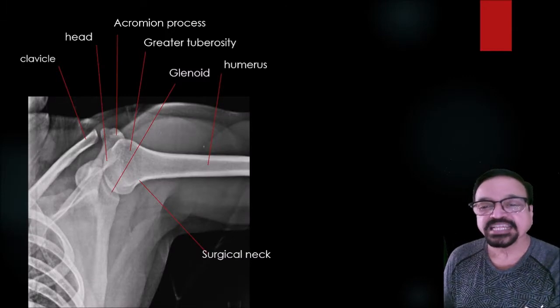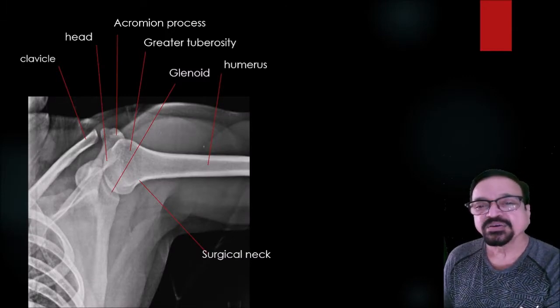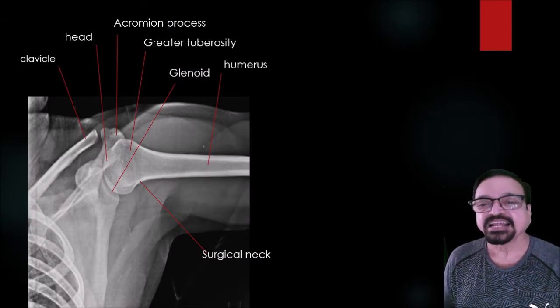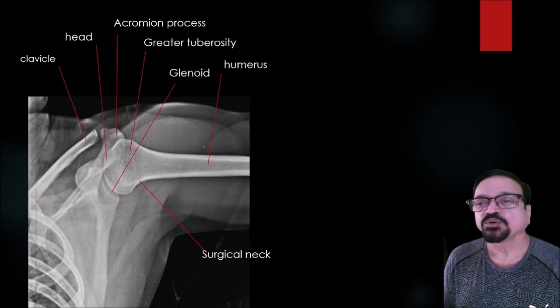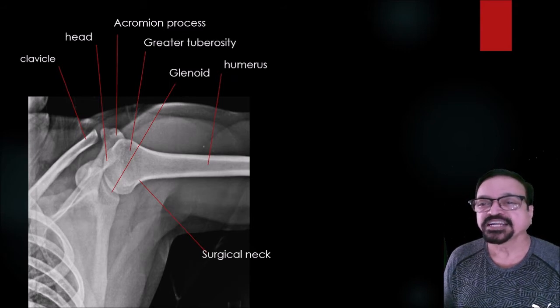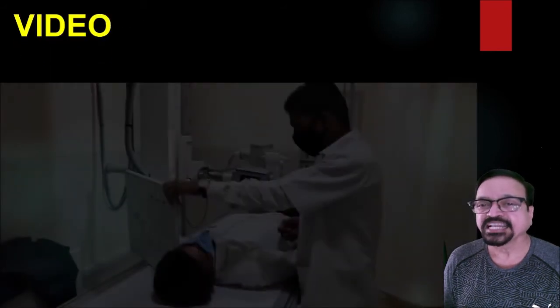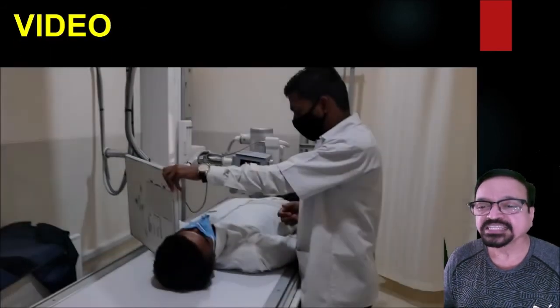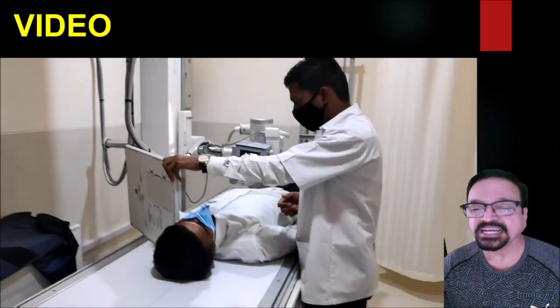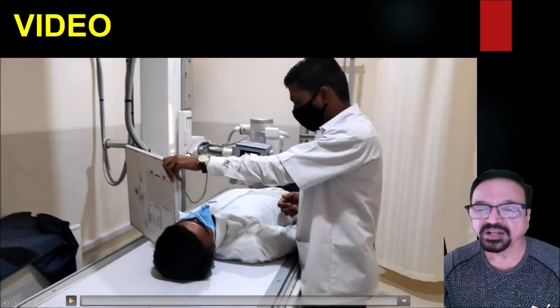Now in the axial view, you can see the clavicle, coracoid process, acromion process, greater tuberosity, glenoid, humerus, and surgical neck. Both the anatomical neck and surgical neck will be seen in this projection. Now let's see how it is taken on a video.